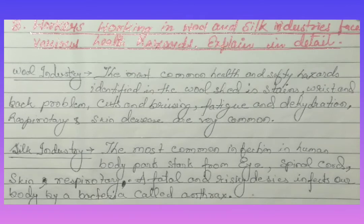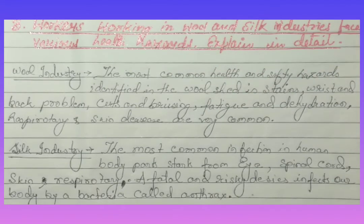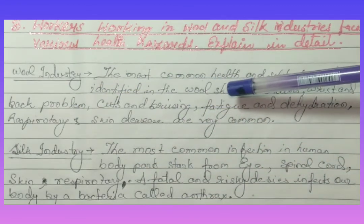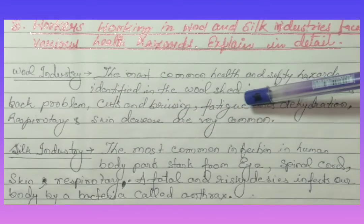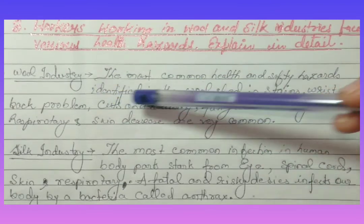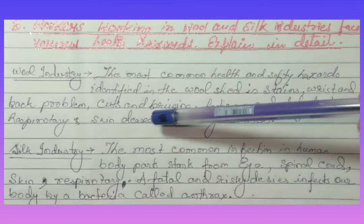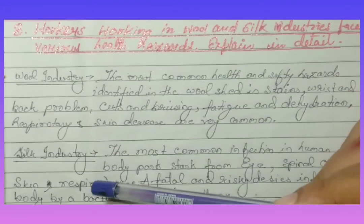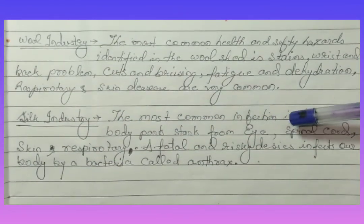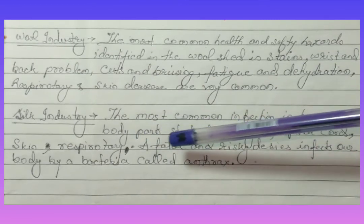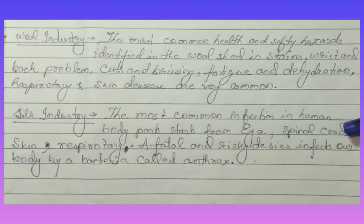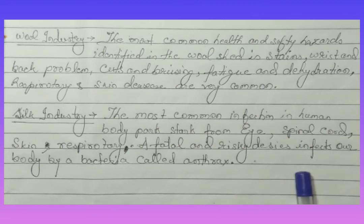Workers working in wool and silk industries face various health hazards. The most common infections affect the eyes, spinal cord, skin, and respiratory system. A fatal and risky disease that infects the body via bacteria is called anthrax.